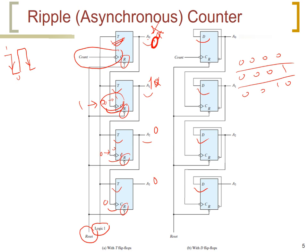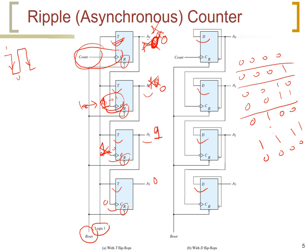The next count pulse makes the first flip-flop toggle to 1, with no change to the others, giving count 0, 0, 1, 1. At the following count pulse, the first flip-flop becomes 0, causing the second to toggle to 0, which in turn causes the third to toggle to 1. Three flip-flops toggle, and the next count becomes 0, 1, 0, 0. We continue in this way — it will count exactly as the previous counter, reaching 15, after which all flip-flops toggle one after another back to 0, 0, 0, 0.